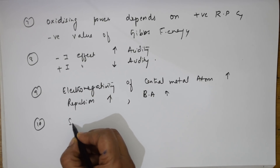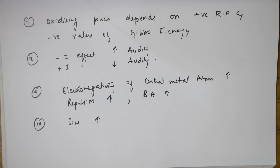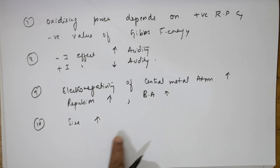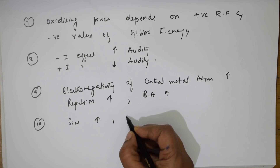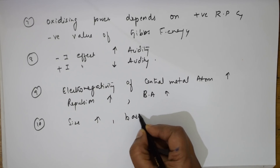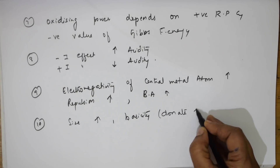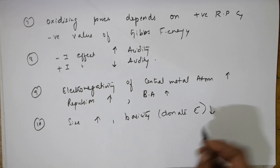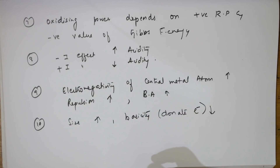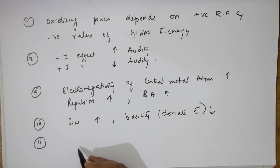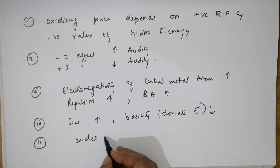The 10th concept relates size and basicity. As size increases, electron density gets diffused over a larger surface area. So the ability to donate electrons — which is basicity — decreases because over a large surface area the donating capacity also decreases. Remember this concept.